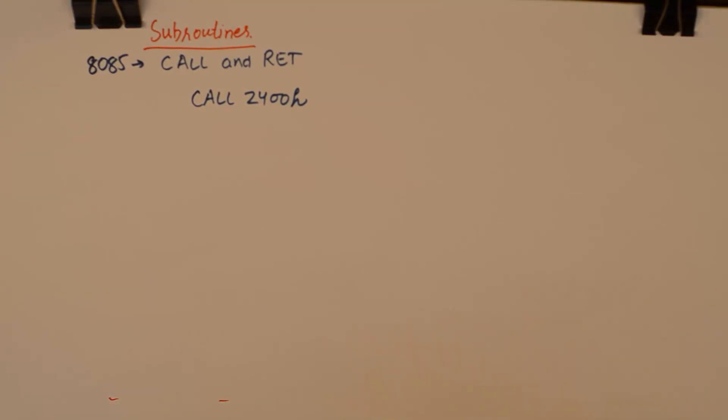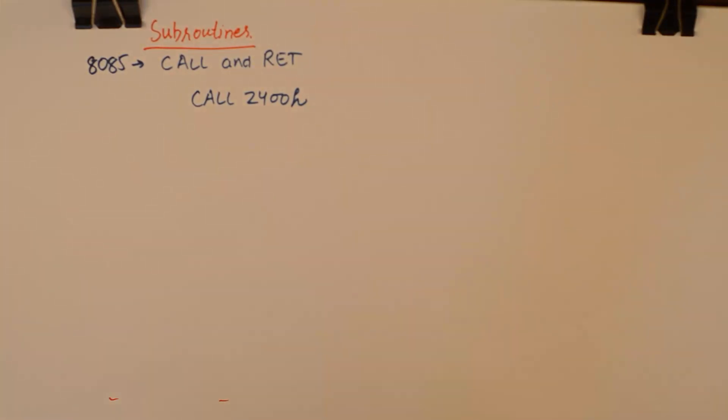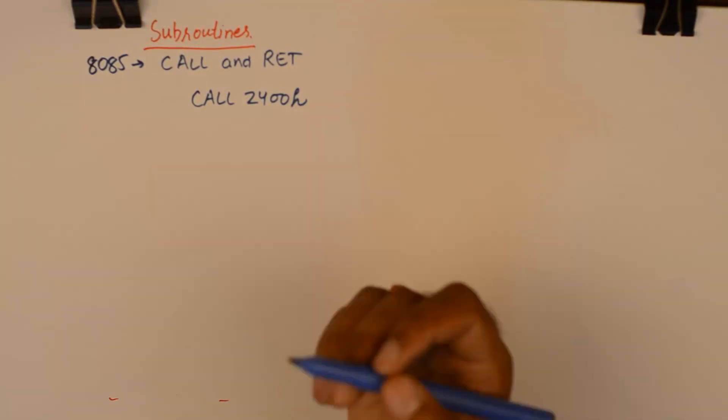After the call instruction, you specify the address location where you would want your microprocessor to go to perform a small little task known as a subroutine. But what happens in the background when a call instruction is executed and what happens when the subroutine finishes a task and comes back to the main program is what we will study now. Now a call instruction is a 3-byte instruction as we can see. And it points to a memory location. And every call instruction will be accompanied by a return instruction in the subroutine. So I'll draw a flow chart of this.